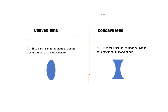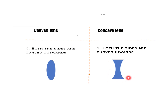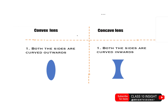With respect to the surface, both the sides in the convex lens are curved outwards. You can clearly make out the surface is curved outwards. Whereas in the concave lens, both the sides are curved inwards. If the sides are curved inwards, then it is called a concave lens.